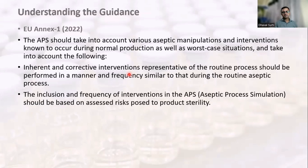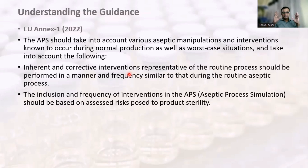The inclusion and frequency of interventions in the aseptic process simulation should be based on the assessed risk posed to product sterility. For example, rubber stopper addition is a routine intervention that may need to be performed 30 to 40 times during a large batch, but in media fill the number can be adjusted based on the media fill size. Such routine interventions with low sterility risk can be optimized, but critical interventions — such as adjusting a sensor or removing a jam requiring significant effort — must be simulated at exactly the number seen in routine production.